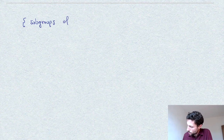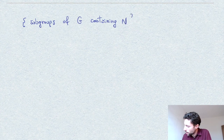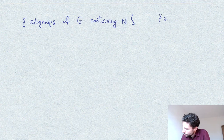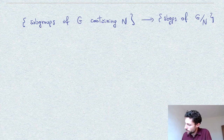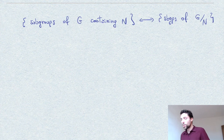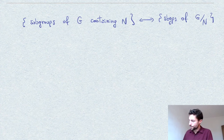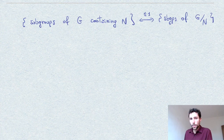These subgroups correspond to subgroups of G containing N — that is, there is a bijective correspondence between subgroups of G containing N and subgroups of the quotient G over N. We can think of subgroups of the quotient as subgroups of the original group G containing the group by which we are quotienting. Let's first prove this bijective correspondence.